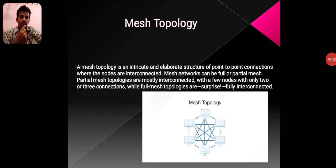Mesh Topology. Mesh topology is an intricate and elaborate structure of point-to-point connections where nodes are interconnected. Mesh networks can be full or partial mesh. Partial mesh topologies are mostly interconnected with a few nodes having only two or three connections, while full mesh topologies are completely interconnected.